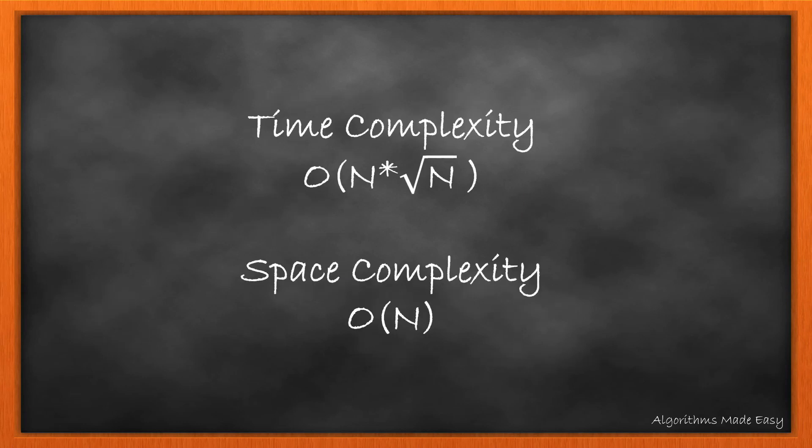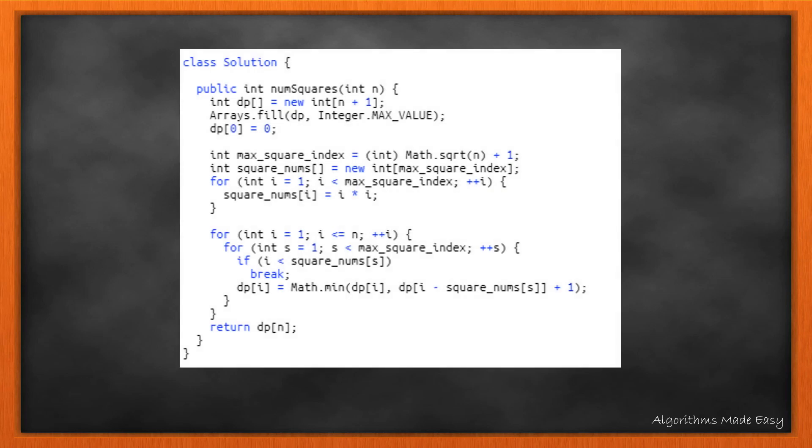The time complexity is O(n * √n) while the space complexity is O(n). Here is the code snippet for the method.